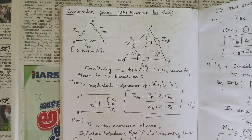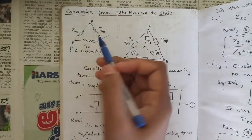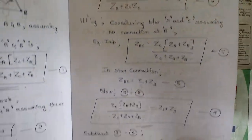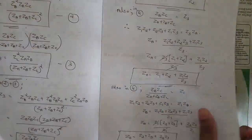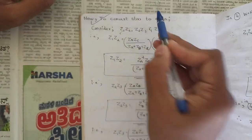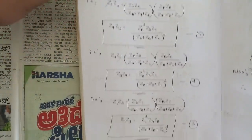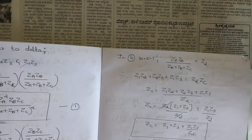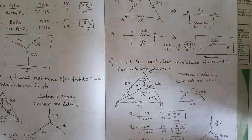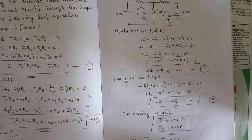One question related to conversion of star to delta and delta to star is a must. Using the standard formulas, the derivation for delta to star conversion should be noted. Also, the derivation for star to delta conversion — considering Z1, Z2, Z3 separately — is a must question. One problem related to star-delta transformation will also be asked, so please revise this problem as well.